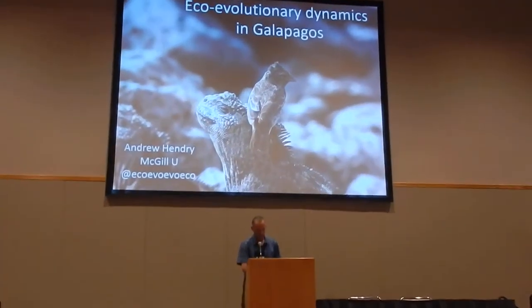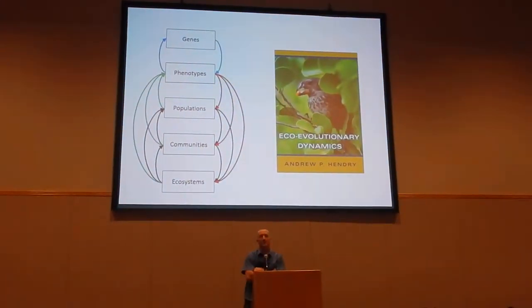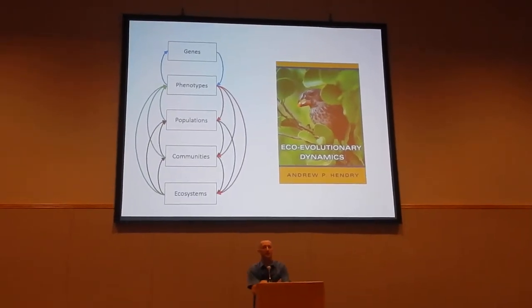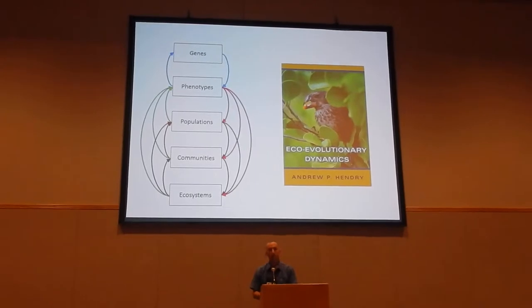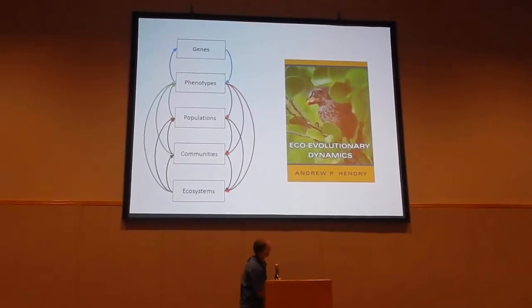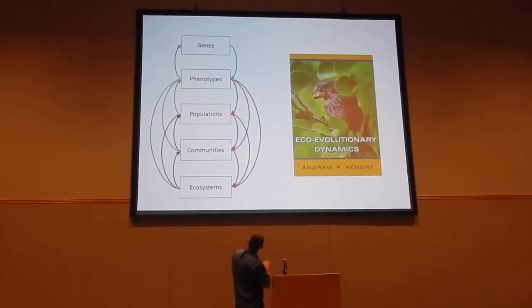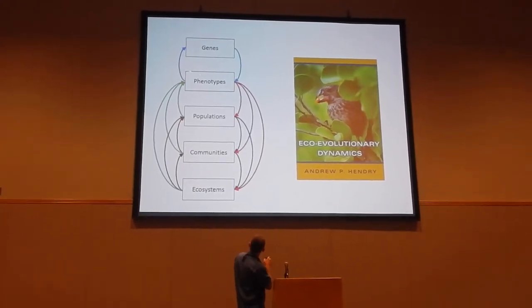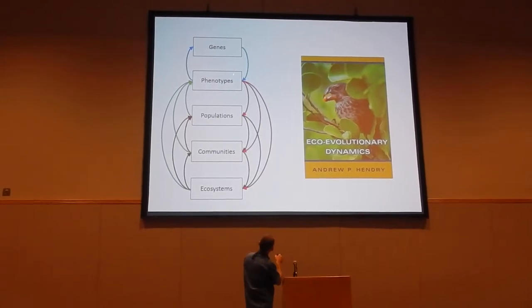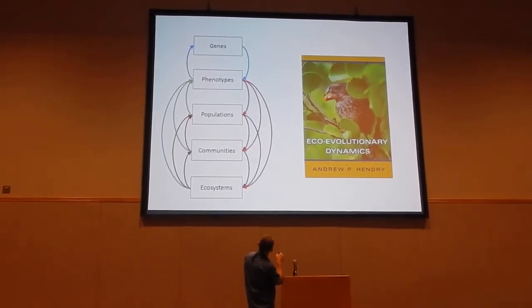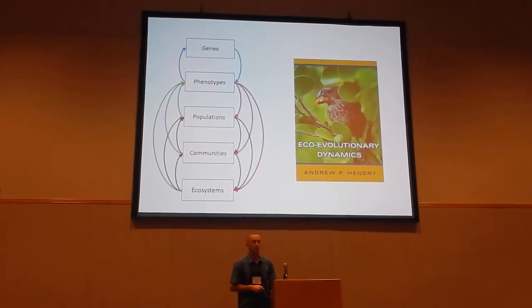I'm going to introduce the overall general idea with a single slide: evolution and ecology interact, reinforce each other, and feed back. You have an interaction between ecological dynamics at different levels that are influencing selection on phenotypes, and then the evolution and phenotypic plasticity of those phenotypes will have effects on the populations, communities, and ecosystems.